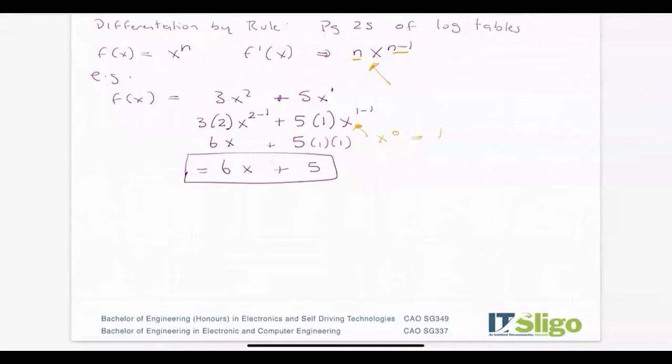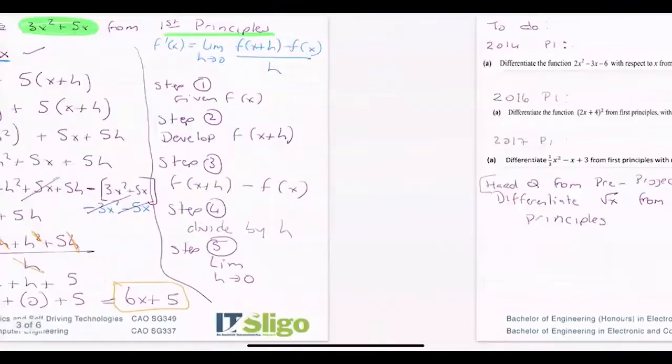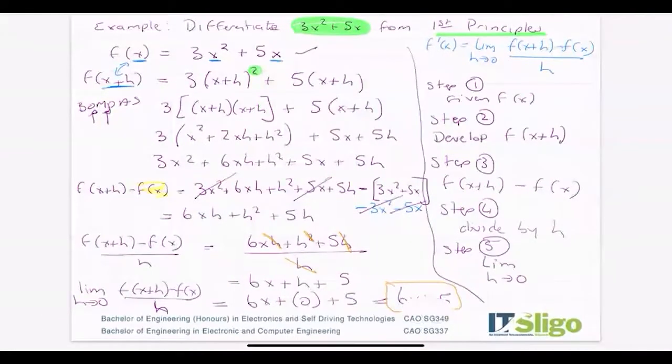You go straight from the original to the answer. If you go back, you can see 6x + 5 matches our earlier result. This shows how much faster the rule is compared to differentiating from first principles.